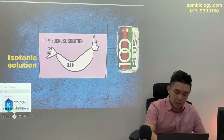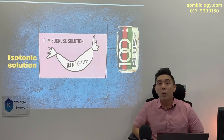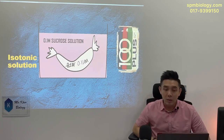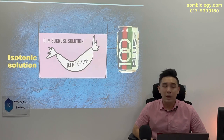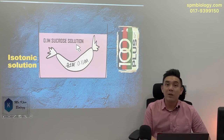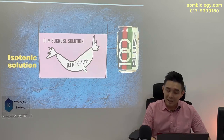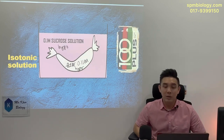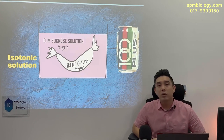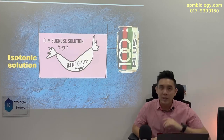Let's say I change this to 0.11 mole outside and 0.1 mole inside. Is the solution now isotonic? The answer is no. Because of the extra 0.01 mole, inside is now hyper again and outside is hypo. For isotonic to apply, inside and outside concentration must be exactly 100% the same.